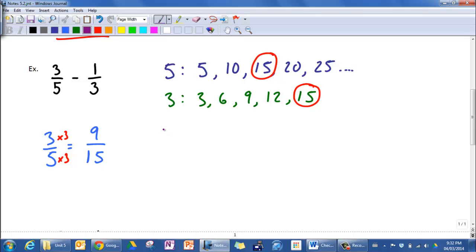I'm going to do the same thing here with one-third. So I want one-third to be something over fifteen. Three times five gives me fifteen, so one times five gives me five.